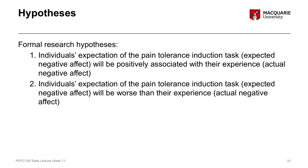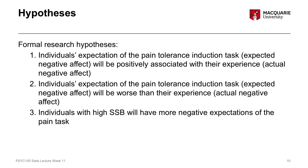Our second hypothesis is that individuals' expectation of the pain tolerance induction task — their expected negative affect — will actually be worse than their actual experience of negative affect. In other words, their expectations will be worse than reality. Our third hypothesis is that individuals with a high somatic symptom burden will have a more negative expectation of the pain task compared to those with a low somatic symptom burden.